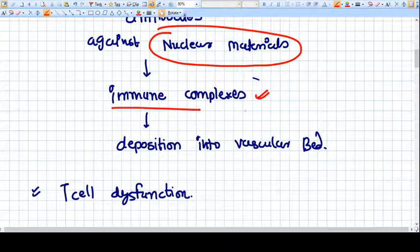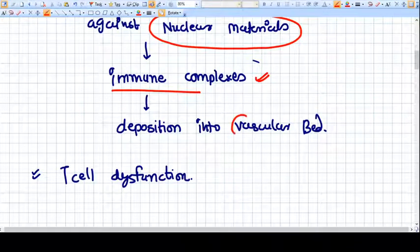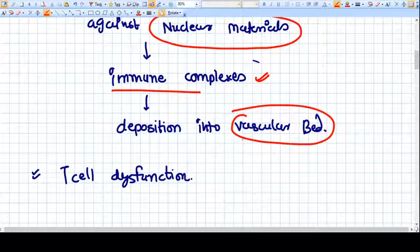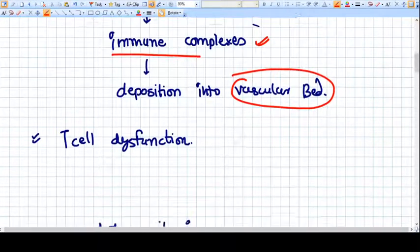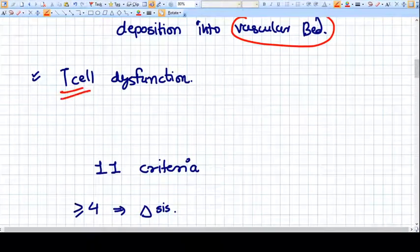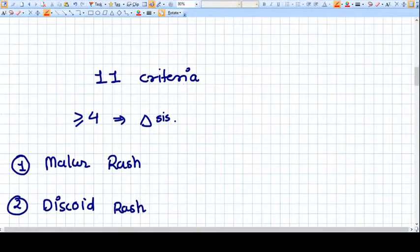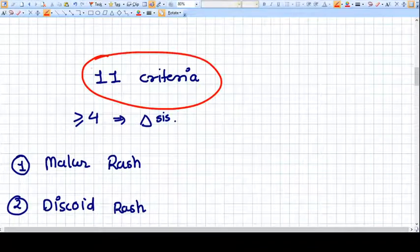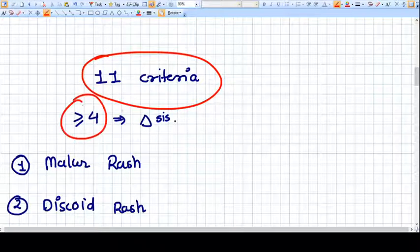These immune complexes will deposit into the vascular beds of various systems and cause problems there. There is also T cell dysfunction.